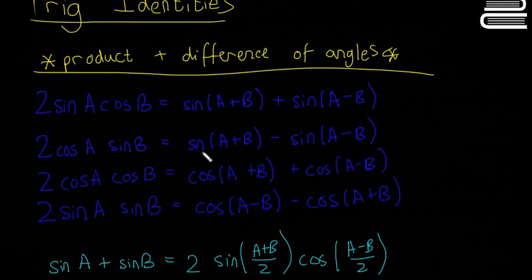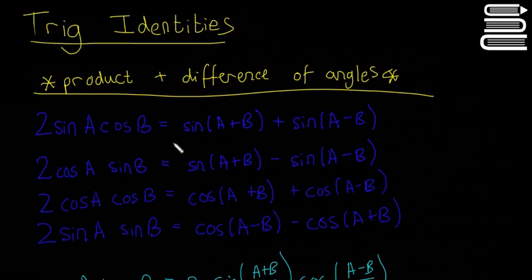You can't memorize them and that's all they really ask. These are the trigonometric identities that get asked the least without a doubt. So don't be super worried about them. All it is really is just using the formula. So we're going to do two quick examples.